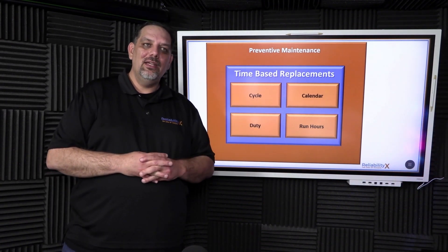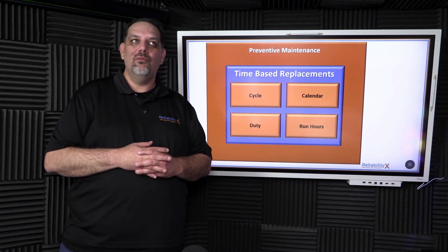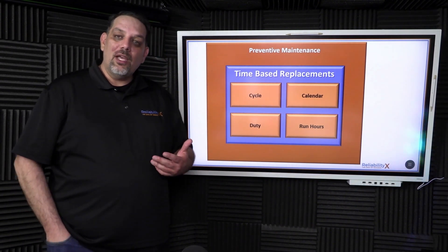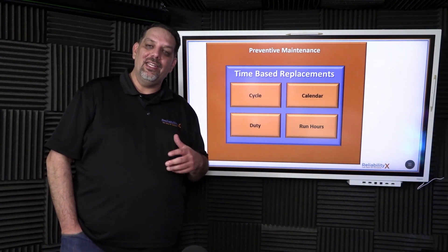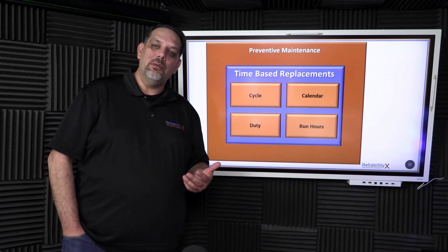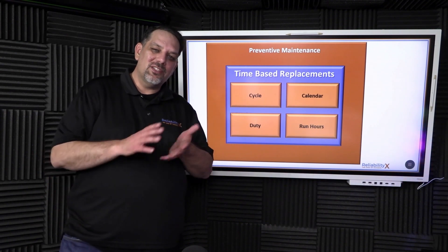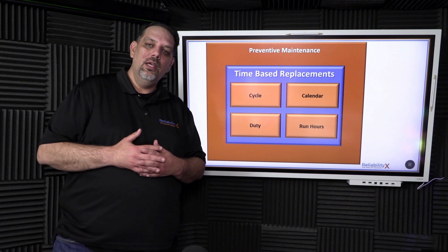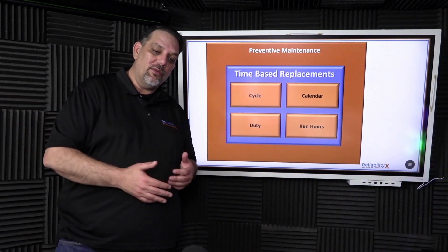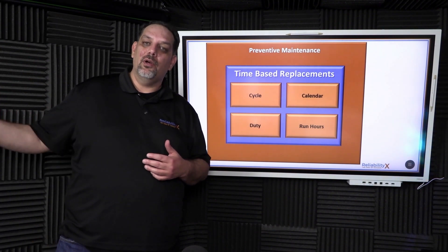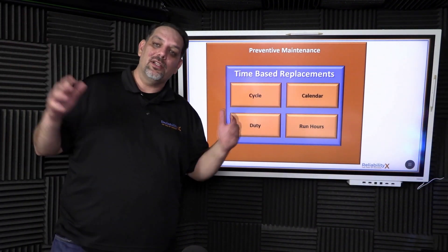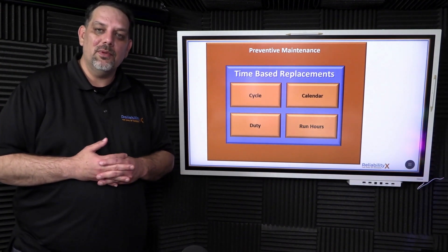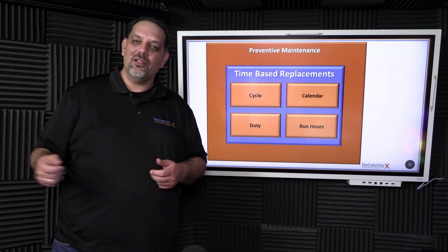What I find a lot, though, is because we haven't solutioned root causes, we put a PM in place to replace certain components to mitigate failure. I would say that's a temporarily good thing to do. But what ends up happening is it becomes permanent. For example, one of the places I worked would replace the veins in a dry vein vacuum pump every three months. And the reason they do that is because around the three and a half, four-year mark, the veins would break and fail. And so for seven years, every three months, they would go out and replace these veins religiously and say, see, look, it works.